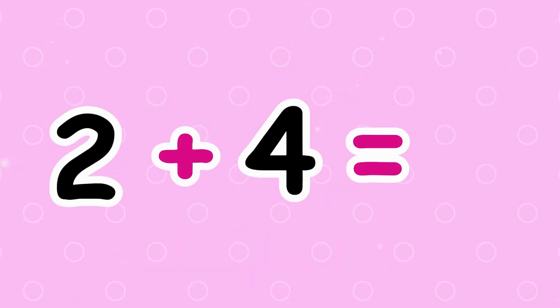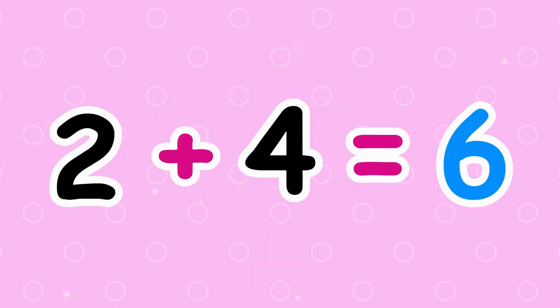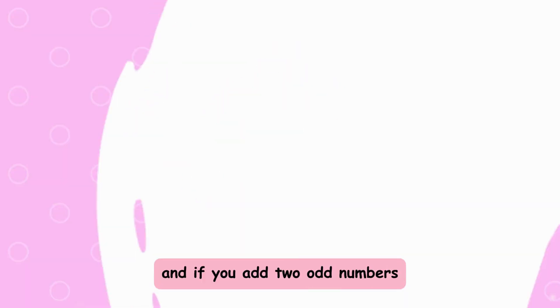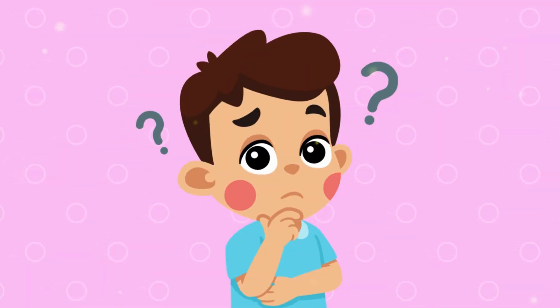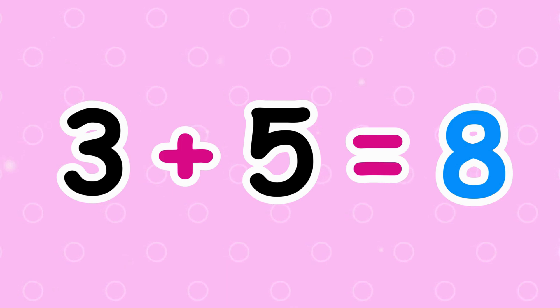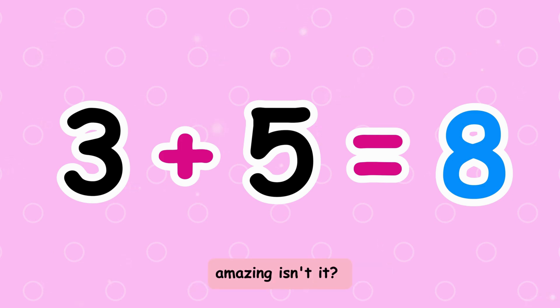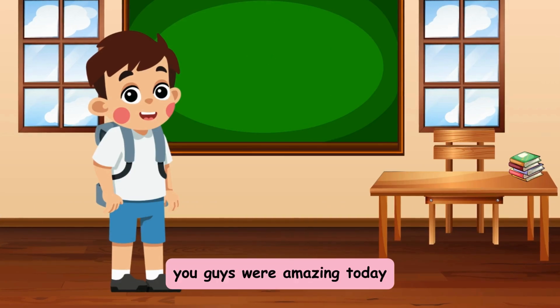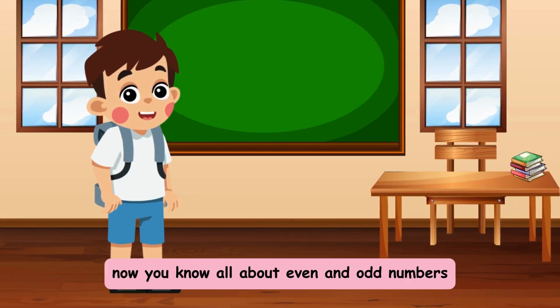Two plus four equals six — see, it's even! And if you add two odd numbers, guess what? Three plus five equals eight — you get an even number too! Amazing, isn't it? You guys were amazing today. Now you know all about even and odd numbers!